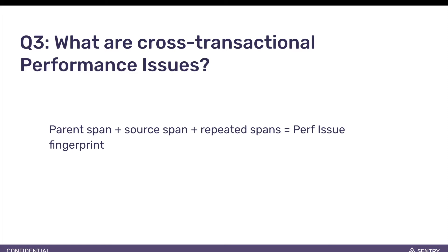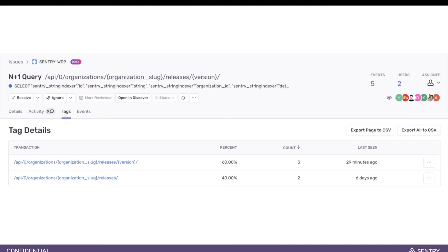The next question was: what are cross-transactional performance issues? Performance issues are fingerprinted based on the spans involved in an N+1 problem — specifically the parent, source, and repeated spans. Because transaction name isn't a part of it, it's possible to have the same performance issue that manifested itself in transaction events with different names. Here's an example of an issue like that. If we click into the tags view, you can see that there are two transactions. These transactions are affected by the same performance problem because they have the same underlying spans that caused it.